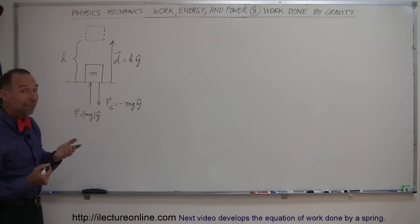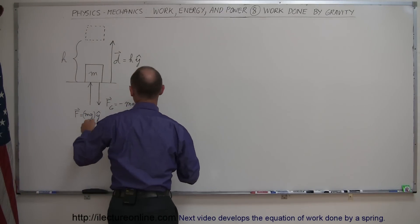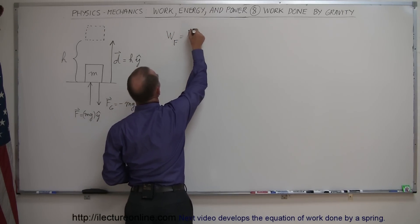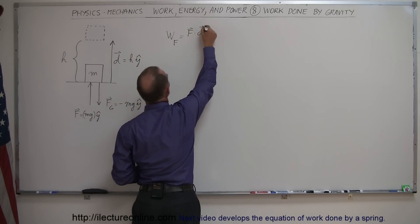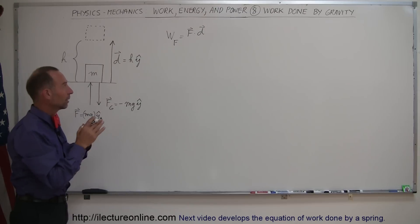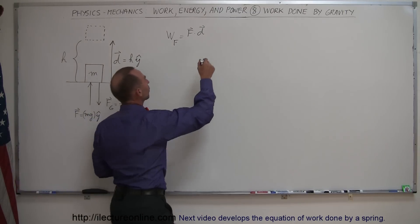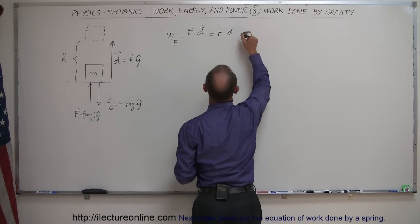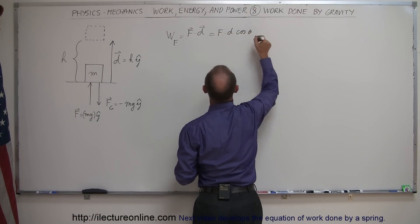That means that the work done by this force is equal to the force times the displacement. Of course, these are vector quantities, and so we have to multiply it with the dot product. So this is equal to the magnitude of the force times the magnitude of the displacement times the cosine of the angle between them.